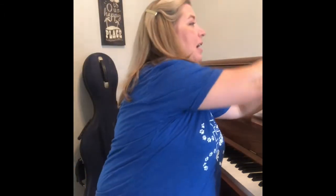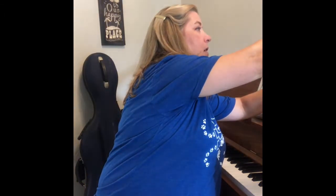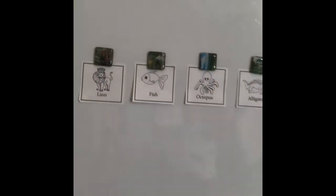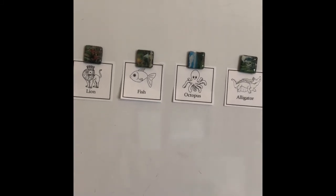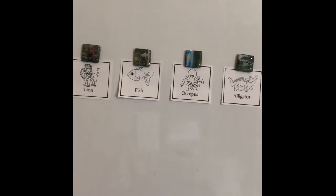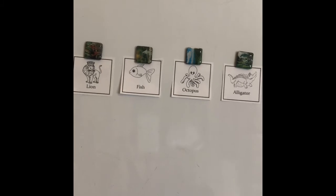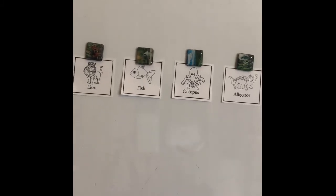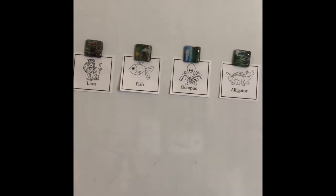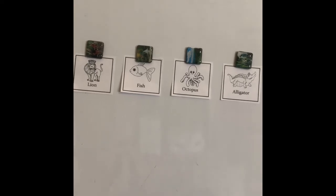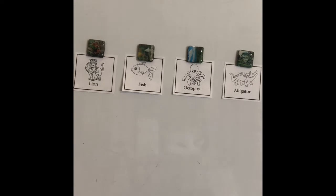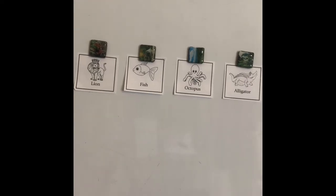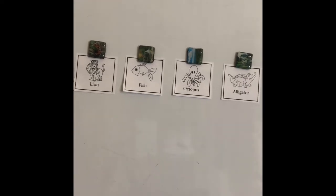So now we have all four animal rhythms on our rhythm board. Can you see all four of them in a row? Now we're going to say and clap all four of them in a row. Will you clap or pat while we say these animal rhythms in a row? Ready, everybody? Here we go. Lion. Fish. Octopus. Alligator. Hey, that was pretty good.